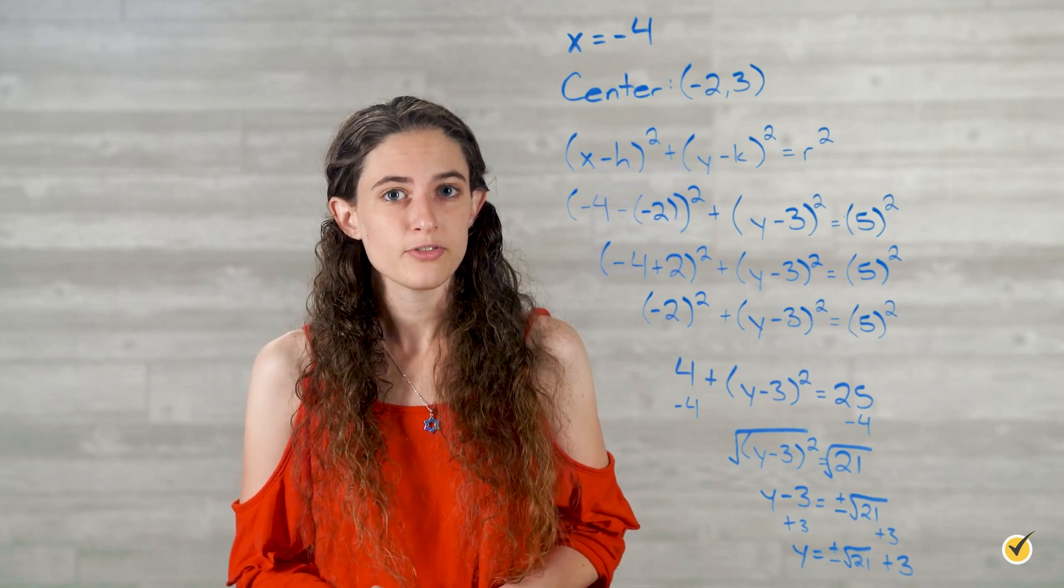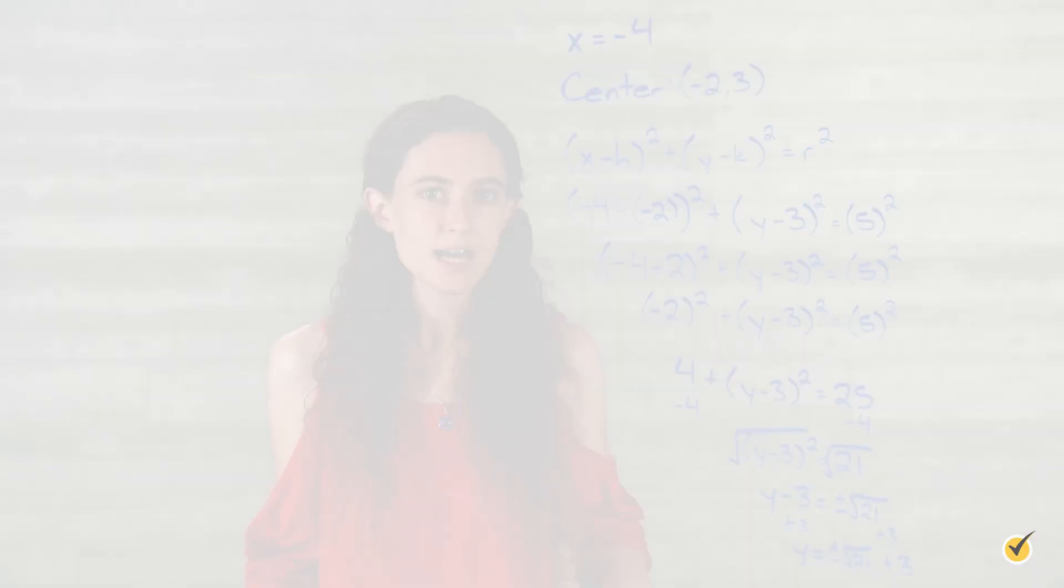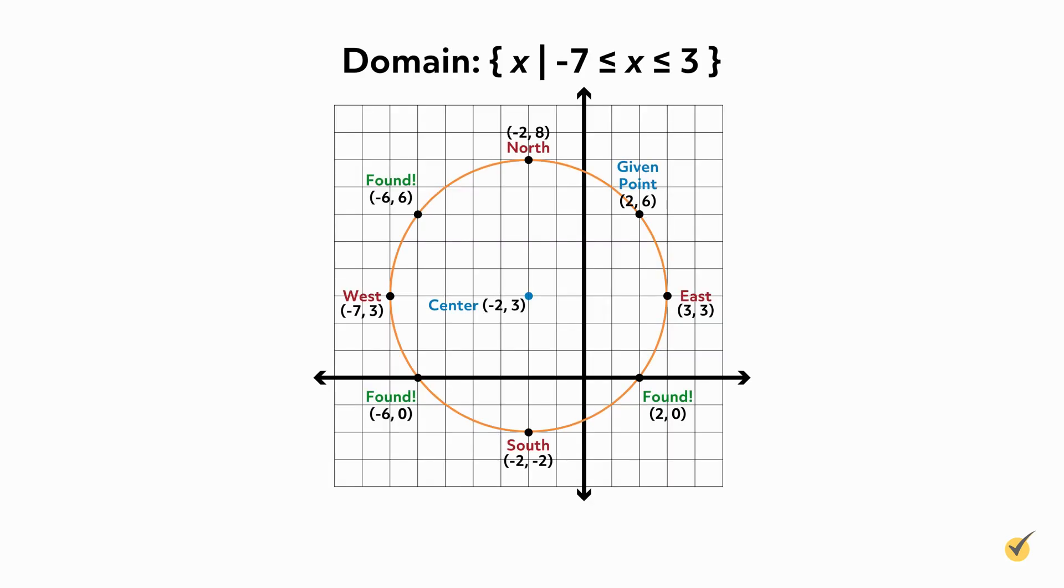If we're plotting those points on a graph, we can estimate their value by using a calculator to find that our y values are approximately 7.58 and -1.58, so we can graph those too. Now we're up to 10 points on our circle. Can you find any more? Pause this video now and try. The answer for all the integer values of x will appear shortly after unpausing.